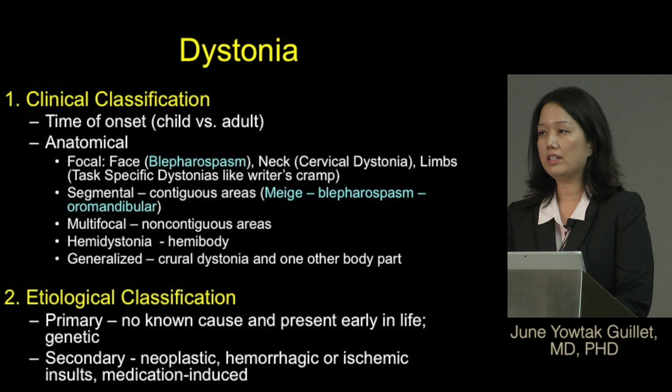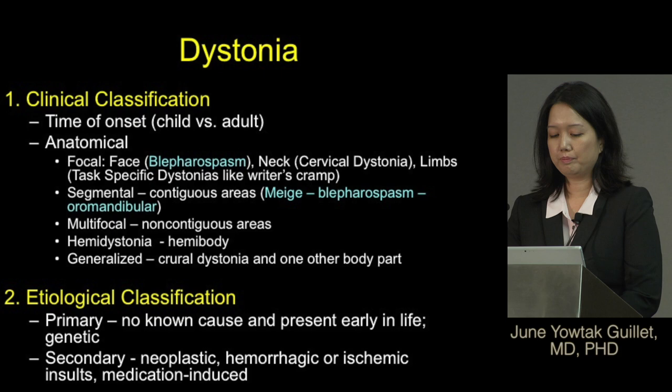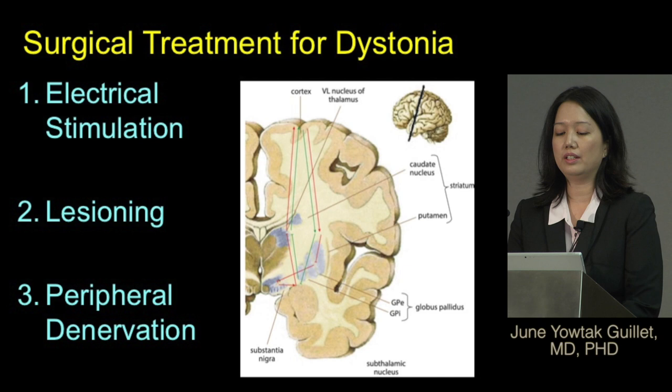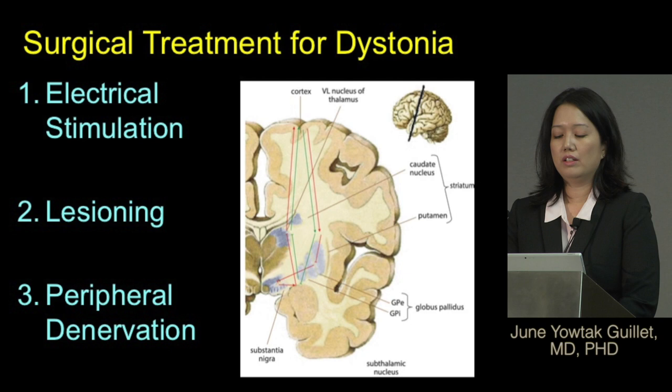The etiological classification depends on whether it's primary, where there is no known cause and it can present early in life, or secondary, where there is a known cause. In the past, surgical treatment for dystonia has involved three separate types.